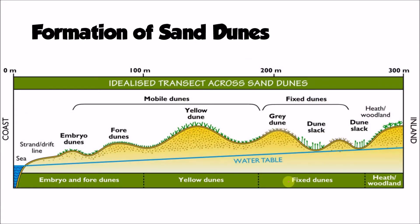Before we look at the specific stages of the formation of sand dunes, I just want us to have a look at this diagram which picks out some of the changes. Perhaps you could pause the video at this point and note down three or four observations of how the sand dunes change as we go inland — so as we go from the sea, 300 meters inland, what do we notice from this diagram?